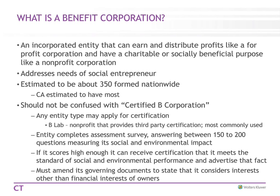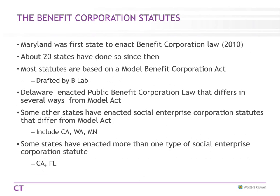There was an organic baby food company that was sold to Campbell's, and another company called Method with organic products that was sold to a global company, showing there's growth. This shouldn't be confused with what's called a certified B corporation — there's an organization called B Lab that can give a seal of approval that you are publicly benefiting, sort of like a charity watch organization. There have been statutes in Maryland and about 20 states. There's also a Model Benefit Corporation Act. Delaware enacted what they call the Benefit Corporation, which differs in several ways from the Model Act.